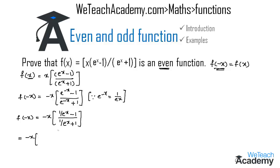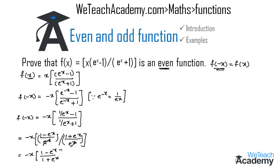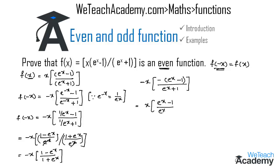Taking the LCM in the numerator and denominator, we get (-x) · (1 - eˣ)/eˣ divided by (1 + eˣ)/eˣ. Taking minus as a common factor in the numerator gives (-x) · (-(eˣ - 1)) / (eˣ + 1). Multiplying minus into minus gives plus, so this is nothing but the given function f(x). Therefore f(-x) = f(x).